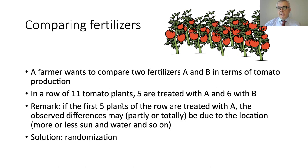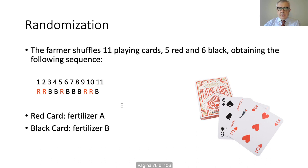For instance, there could be a tree casting a shadow on part of the ground. It might then appear that one fertilizer is better, when in fact all the plants treated with that fertilizer simply happened to be under the tree's shadow. The solution to this problem is randomization.